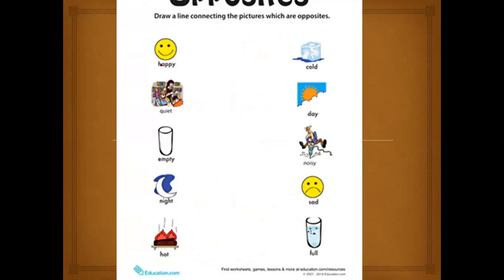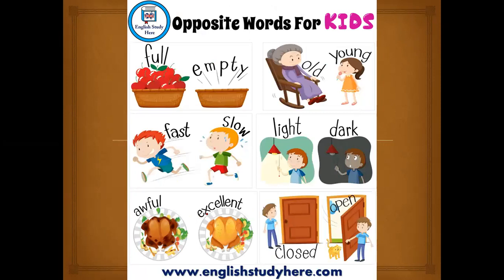Draw a line connecting pictures which are opposite. So first we always need to read the words: happy, quiet, empty, night, hot, cold, day, noisy, sad, full. So let's do this: happy you will match it with sad, quiet you'll match it with noisy. So now that you are at home you're very quiet. In the class you love to meet your friends, your teachers, your other subject teachers, it becomes noisy. Empty and full, night and day, and then hot and cold.